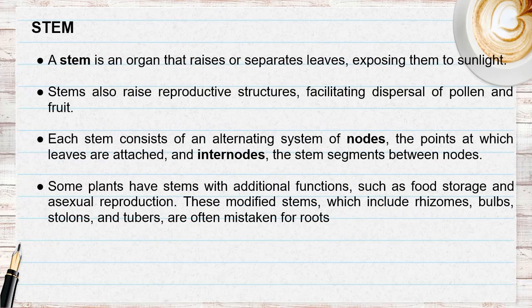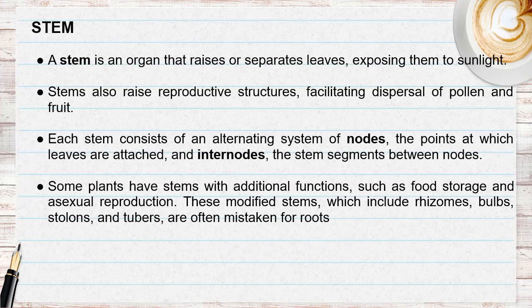The stem is an organ that raises and separates leaves, exposing them more to sunlight. The stem also raises reproductive structures — the flowers — facilitating the dispersal of pollen and fruits. Each stem consists of an alternating system of nodes, where leaves are attached, and internodes, which are the gaps between nodes. Some plants also have stems with additional functions for storage, such as rhizomes, bulbs, stolons, and tubers.